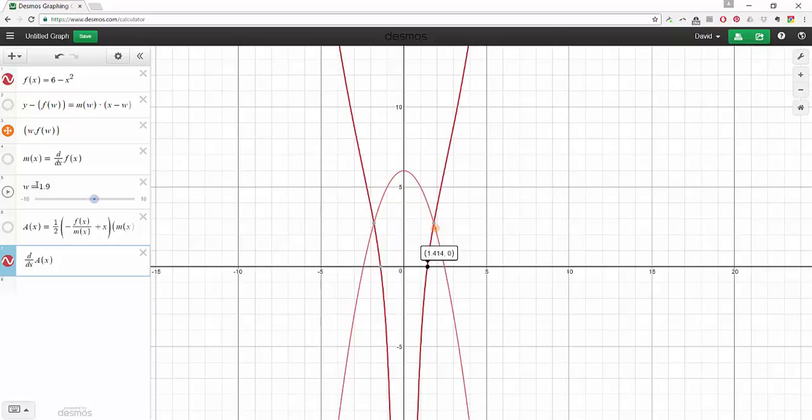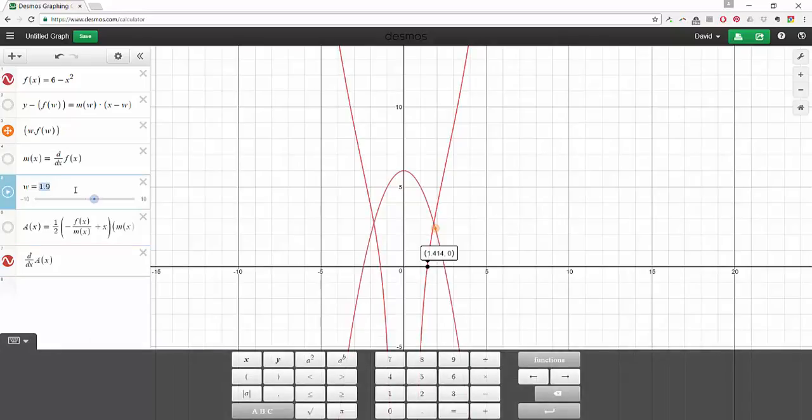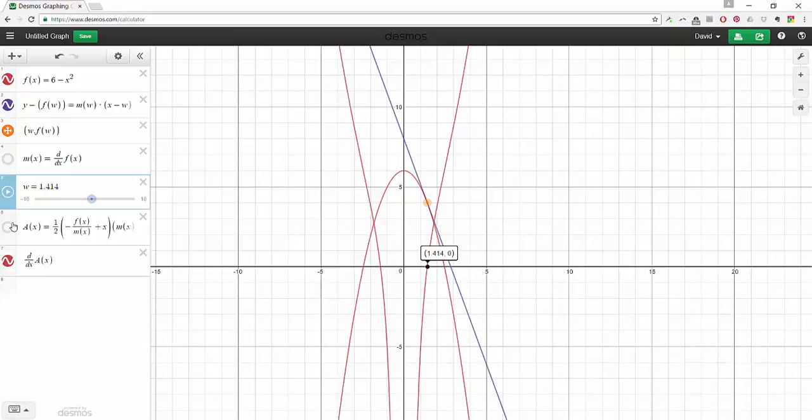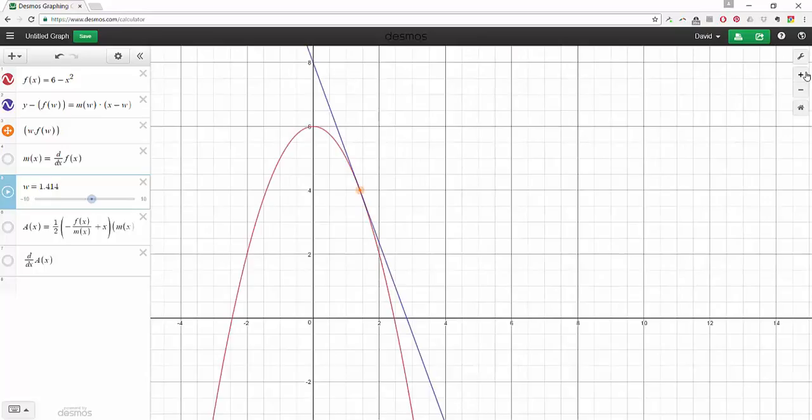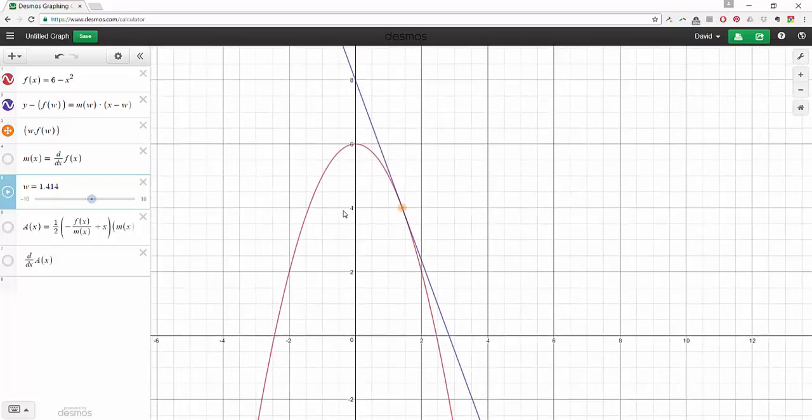So let's set our w equal to that minimum value of 1.414, and let's go ahead and draw our tangent line again and hide the other things. So there it is, that triangle right there. That's cool. So that triangle minimizes the area. So it must be smaller than these triangles over here or these triangles over there. Pretty cool.